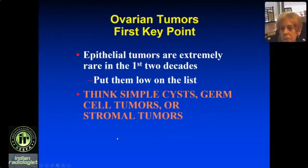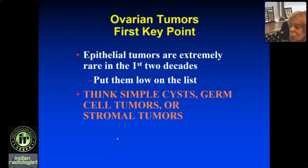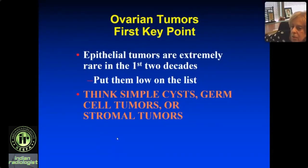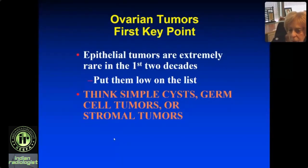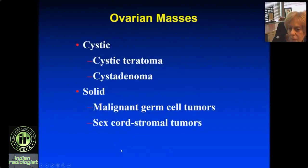One thing about tumors in general: epithelial tumors are rare in any part of the body in children. In adults we're always talking about adenocarcinoma, but that's not what it is in a child. In a child, think of a simple cyst, a germ cell tumor, or stromal tumor — those are embryonic tumors, not adenocarcinoma. For ovarian masses, the cystic ones are teratoma and cystadenoma, and the solid ones are germ cell embryonic tumors and sex cord stromal tumors.